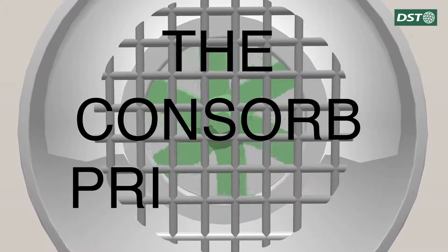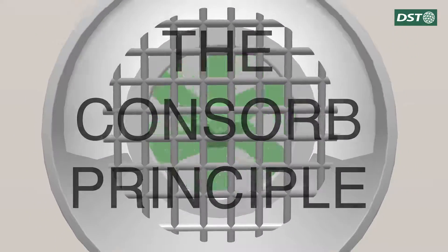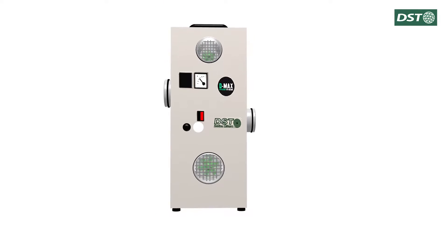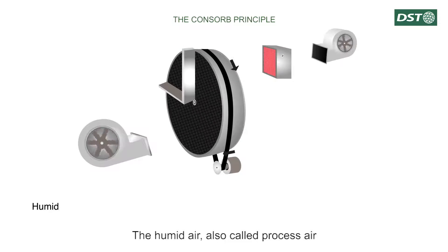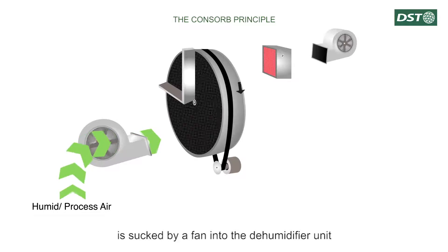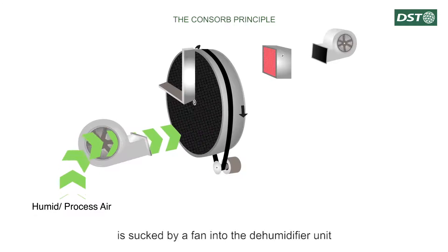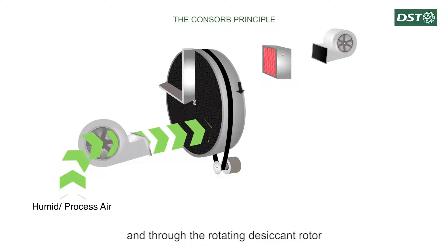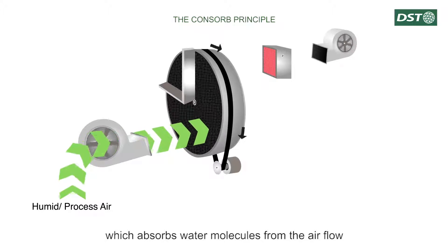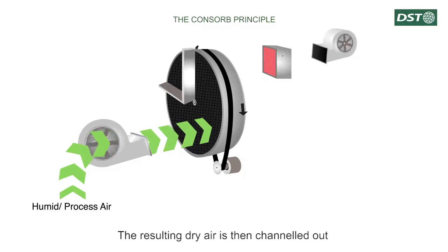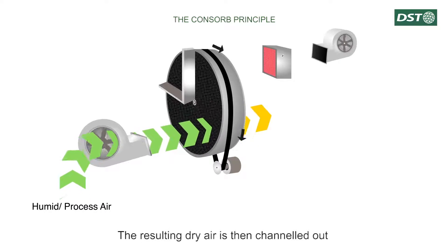The concept principle: the humid air, also called process air, is sucked by a fan into the dehumidifier unit and through the rotating desiccant rotor, which absorbs water molecules from the airflow. The resulting dry air is then channeled out of the dehumidifier unit.